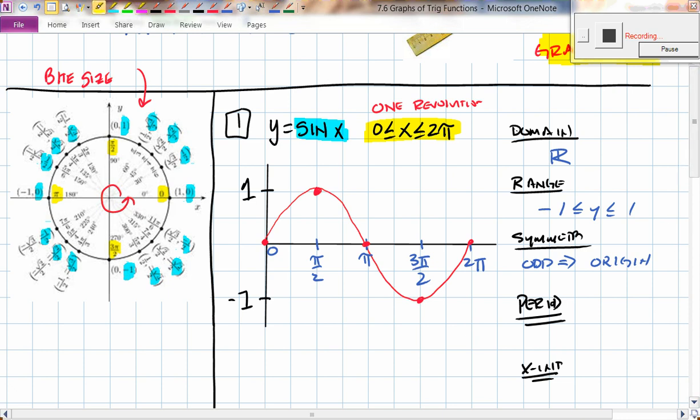Period. The period is basically how long in radians does it take to go from start to finish? So what is that part? How long does it take to go from start to finish of a cycle? Meaning I start at zero, I go up to one, go back to zero, then down to one, and finally start over again. What is that distance? Two π. So therefore, the period for your sine function is a distance of 2π radians.